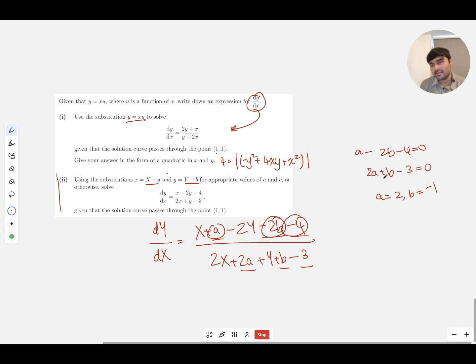You can just test both of those work, or you can solve it. And great, so we're just going to bear that in mind, and we're going to just plug in a equals 2 and b equals -1. And so this just gives us (X - 2Y)/(2X + Y). Amazing. And now we're back to this very nice differential equation that's very similar to part one.